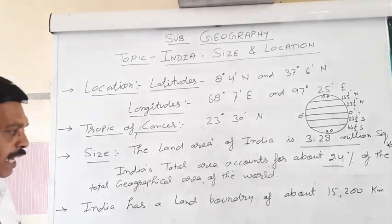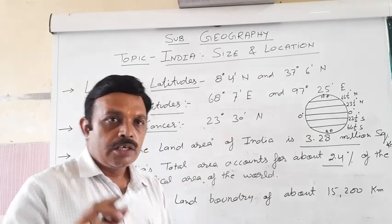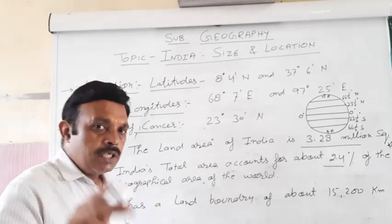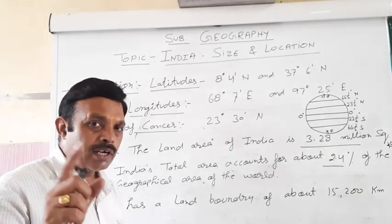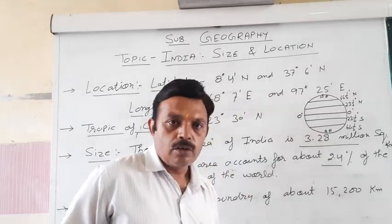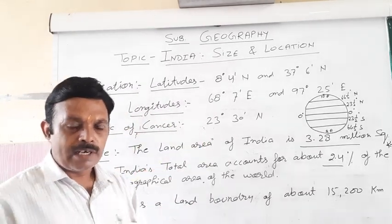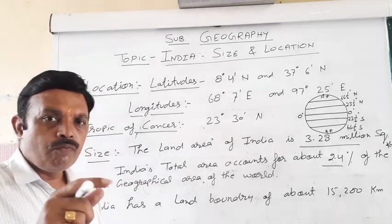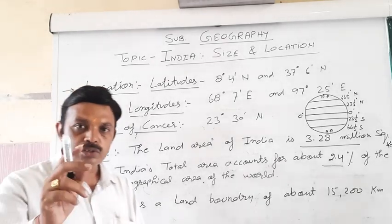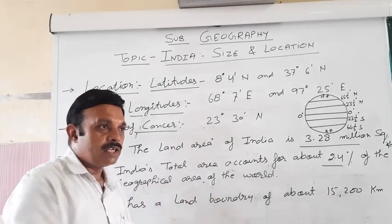Now we discuss about the land boundary. India has a very vast land boundary of near about 15,200 kilometers. You can see by the map of India and understand this land boundary of about 15,200 kilometers. Further, our peninsular portion — the coastal region — the coastline is near about 6,000 kilometers, covering the coastal area.